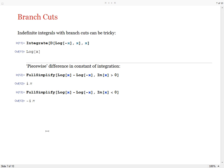For indefinite integrals involving functions with branch cut discontinuities, the situation can be more complicated again. In this case we end up with a piecewise difference of constants of integration. In the top half of the complex plane the difference of constants of integration is i times pi, in the bottom half of the complex plane the difference is minus i times pi.